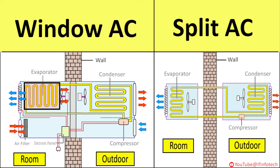The temperature of the cooling coil is much lower than the room air. The refrigerant inside the cooling coil absorbs heat from the air, which is then circulated back into the conditioned room, reducing its temperature. Due to the reduction in temperature of the air, dew is formed on the surface of the cooling coil, as the temperature of the cooling coil is lower than the dew point temperature of the air.